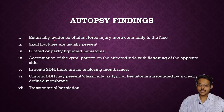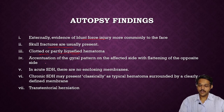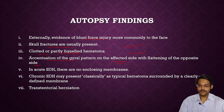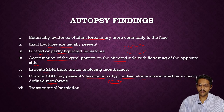Autopsy findings in subdural hemorrhage: externally, evidence of blunt force injury is commonly seen; skull fractures are usually present near the hematoma. Clotted or partially liquefied hematoma is seen. There is accentuation of the gyral pattern on the affected side and flattening of the opposite side. In acute subdural hemorrhage, there are no enclosing membranes; in chronic subdural hemorrhage, a clearly defined membrane surrounds the hematoma. Transtentorial herniation may also be seen.